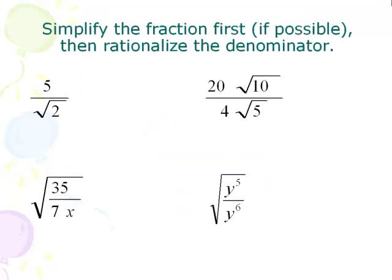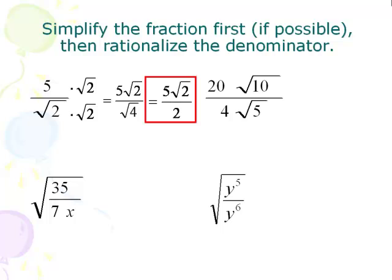On the next one, we want to simplify 5 over square root of 2. We're going to multiply top and bottom by square root of 2. On the top we get 5 square root of 2. On the bottom we get square root of 4, which simplifies to just 2. So 5 square root of 2 over 2 is our final answer. What you started with on the bottom is always going to be what you end with on the bottom, just with no more square root around it.